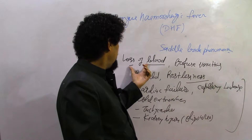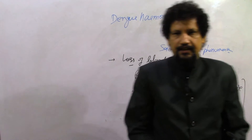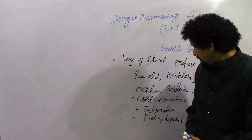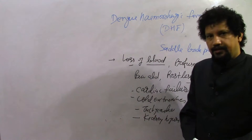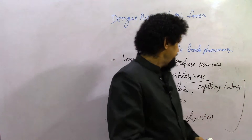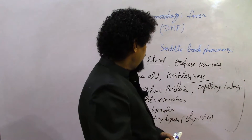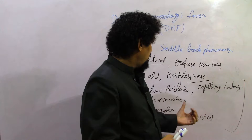Dengue shock syndrome occurs when there is pain in abdomen, blood loss history, profuse vomiting, and restlessness — this is dengue hemorrhagic fever — but when it is accompanied by cardiac symptoms, cold extremities, hypotension, tachycardia, kidney injury, oliguria, capillary leakage, and fluid loss in third spaces, it is known as Dengue shock syndrome.